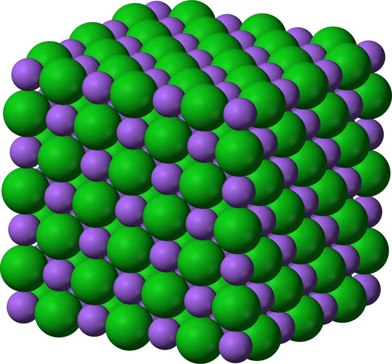These can be simple ions such as the sodium and chloride in sodium chloride, or polyatomic species such as the ammonium and carbonate ions in ammonium carbonate. Individual ions within an ionic compound usually have multiple nearest neighbors, so are not considered to be part of molecules, but instead part of a continuous three-dimensional network, usually in a crystalline structure.